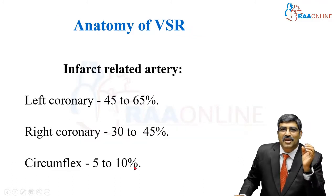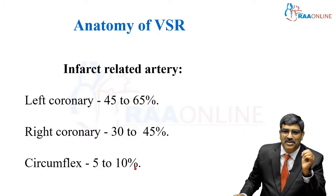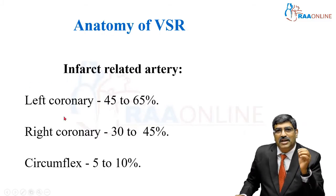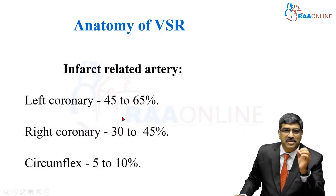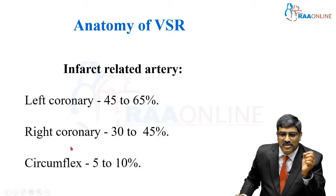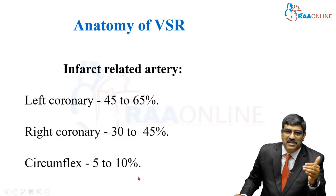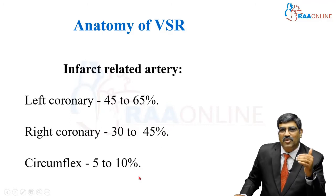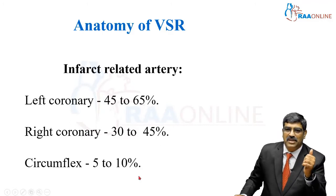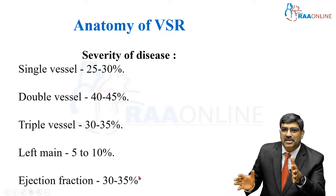So, which is the most common artery which causes ventricular septal rupture? It is the left coronary artery in 40 to 65% of patients, right coronary in 30 to 45% of patients, and circumflex — the least common — is around 5 to 10%.